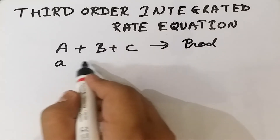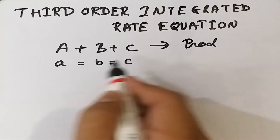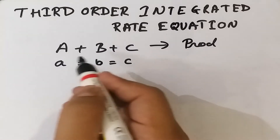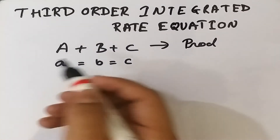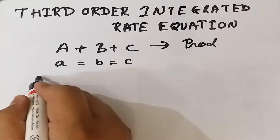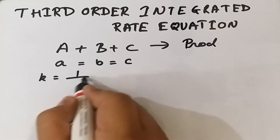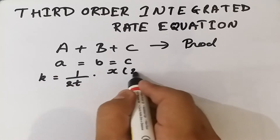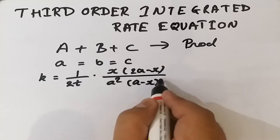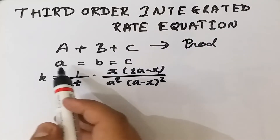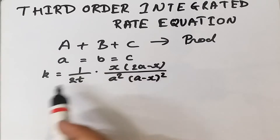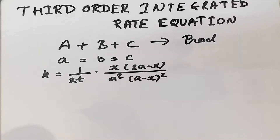The first condition is where A is equal to B is equal to C — that is, the concentration of all the reactants are the same. Under such circumstances, the derivation of the rate constant is very simple, and the integral rate equation is given by: k equals 1 upon 2t into x upon 2a minus x, divided by a squared into (a minus x) squared. This is the rate equation when all three reactant concentrations are the same.